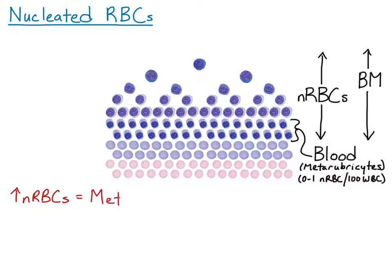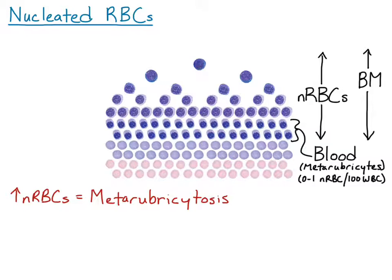If there are increased numbers of nucleated red blood cells in blood, that is called metarubrocytosis. Metarubrocytosis doesn't necessarily mean that all of the nucleated red blood cells are metarubrocytes — they can be earlier stages. We just lump that into the category of metarubrocytosis for any nucleated red.